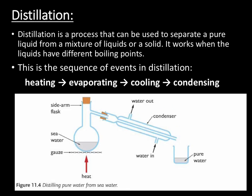The condenser is kept cool by a constant supply of cold water in order to allow this area to remain cold. The condenser then causes the vapour to condense — cool back down — into a liquid. This pure liquid can then be collected.